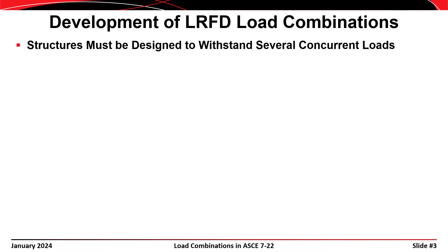Every structure that we design has to be designed for several combinations of concurrent loads. It wouldn't be practical to design a building for just dead load, or a bridge for just live load, or another structure for just wind loads. We have to design for the possibility that each of these loads may occur in combination with each other. The trick is to figure out which combinations of loads we need to consider. One obvious solution is to simply design for all of the loads acting at their maximum lifetime level at the same time.